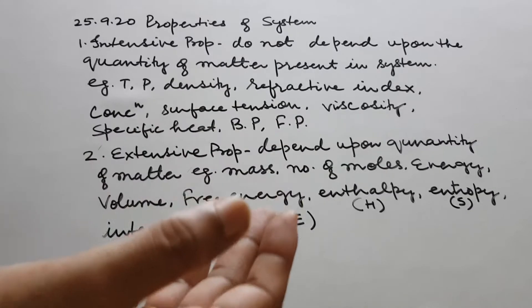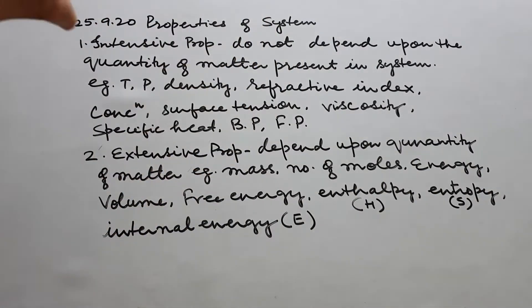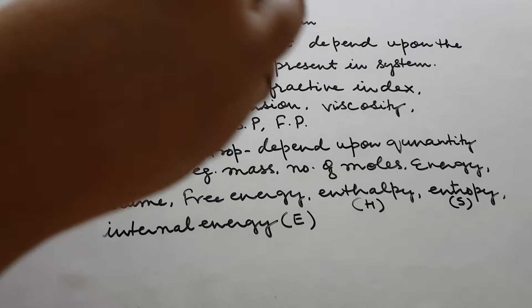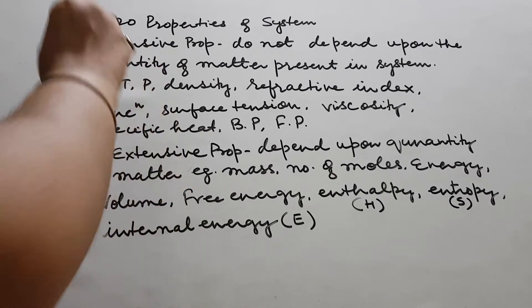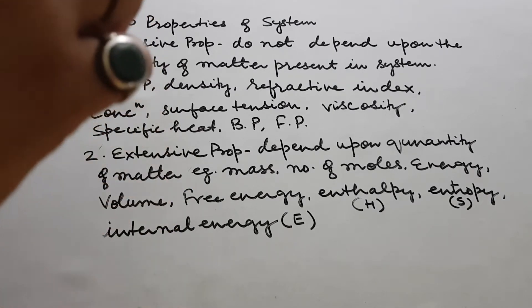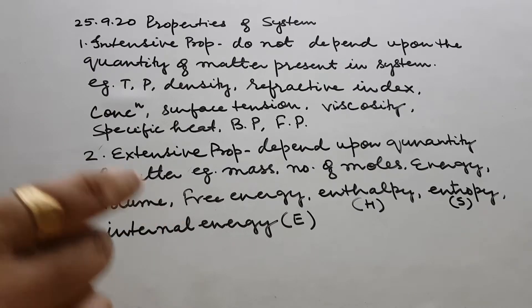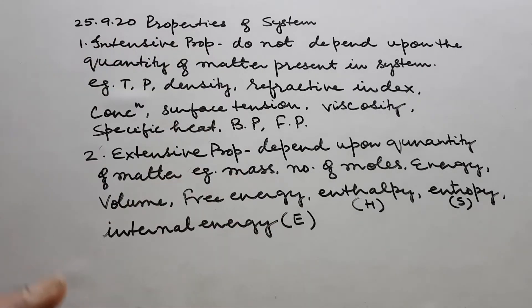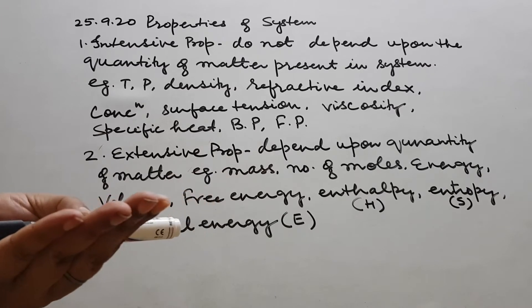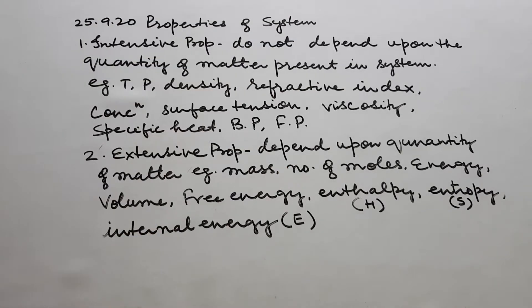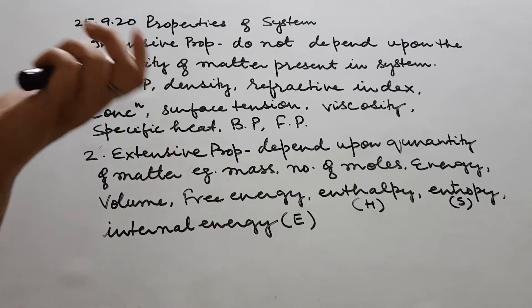Likewise, concentration in terms of percentage: you may have 50 ml of solution with 10% concentration, and you may have 1 liter of solution also with 10% concentration. So ultimately, concentration is also a property that does not depend upon the quantity of matter present in the system. Surface tension also does not — four drops of mercury or ten drops of mercury will have the same surface tension.